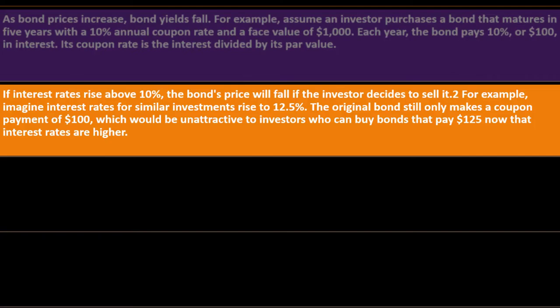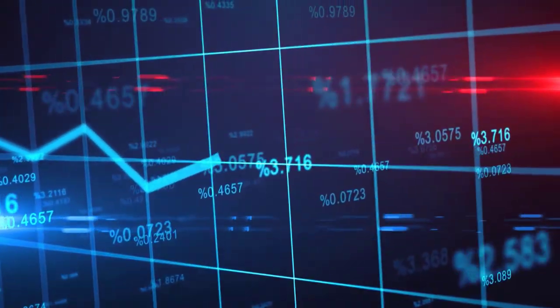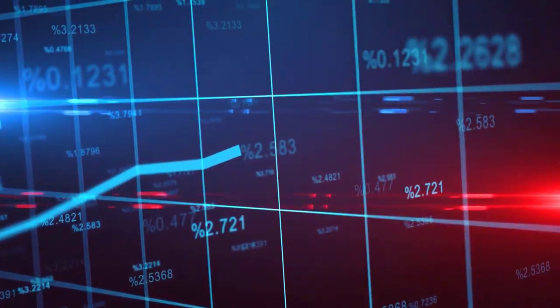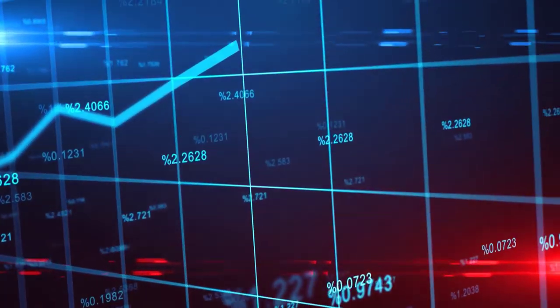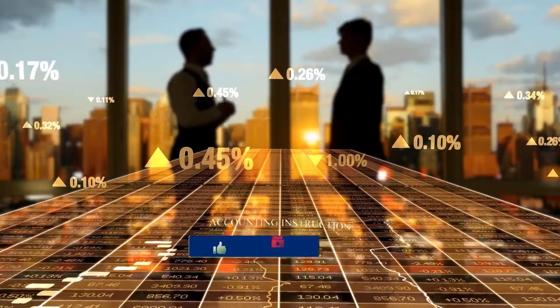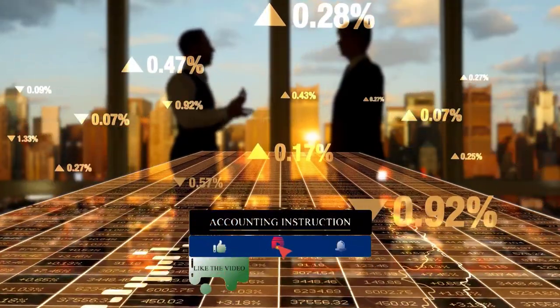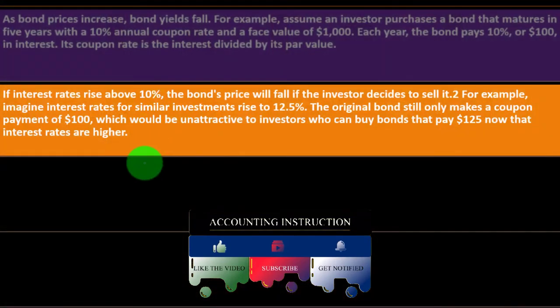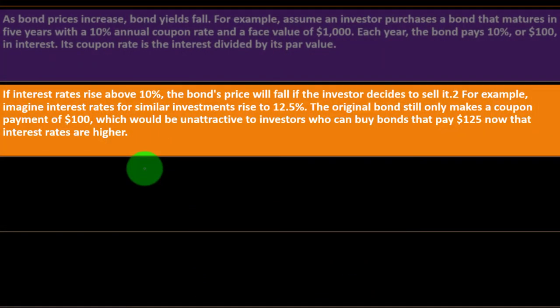If market interest rates go above 10%, the rate on the bond stays fixed at 10% — it doesn't change. When market rates rise, people demand higher rates on equivalent bonds, so the bond's price falls. For example, if interest rates for similar investments rise to 12.5%, the original bond still only makes a coupon payment of $100, which would be unattractive to investors who can now buy bonds paying $125.